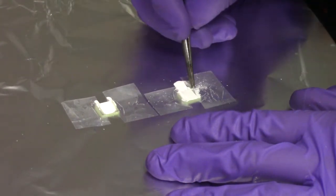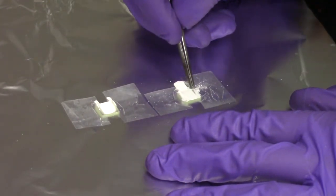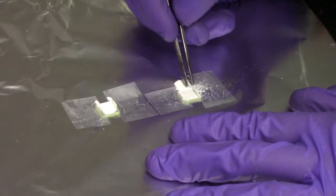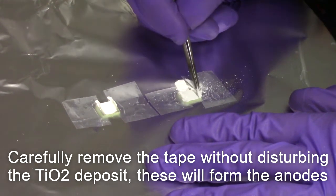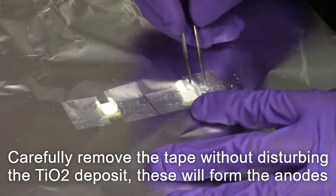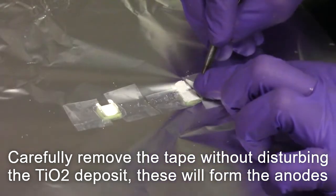After allowing the TiO2 paste to dry, carefully remove the tape off the edges of what will form the anode, taking special care not to scrape the TiO2 deposited surface.